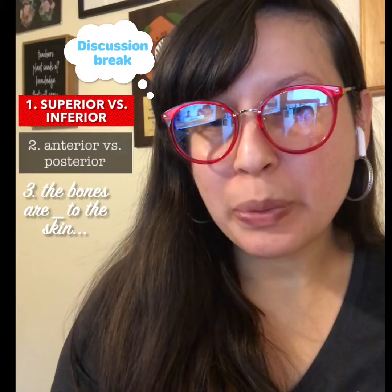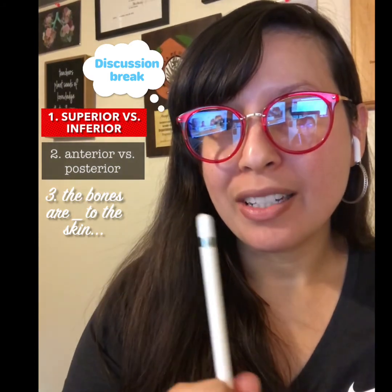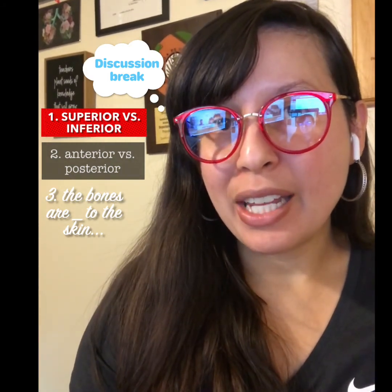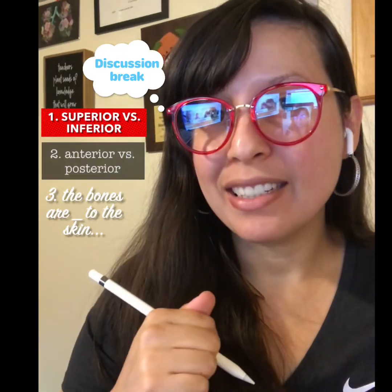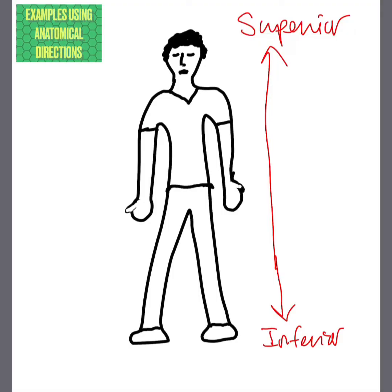In the next part, let's talk about some examples. Discussion questions: What is the difference between superior and inferior? What is the difference between anterior versus posterior? And the bones are blank to the skin. Some examples of superior versus inferior: the head is superior to the abdomen, the navel is inferior to the chin, and the foot is inferior to the chest.